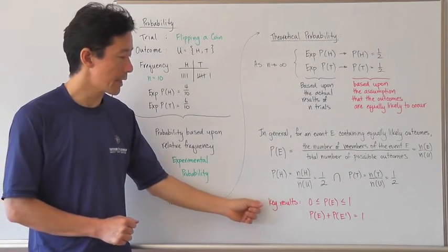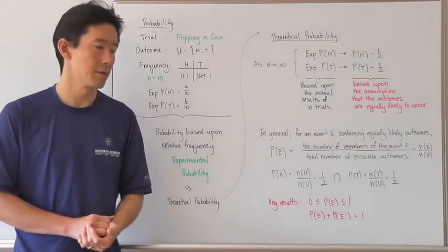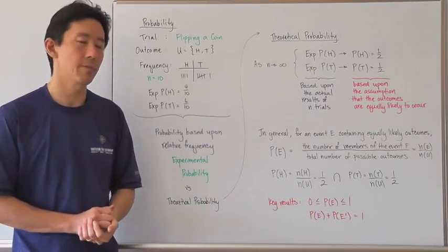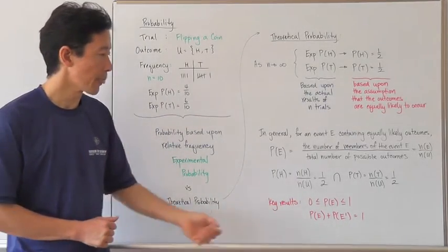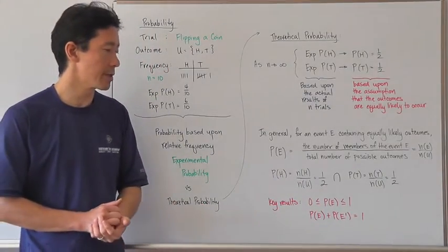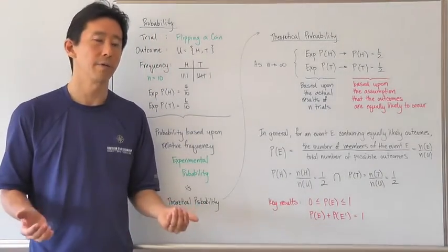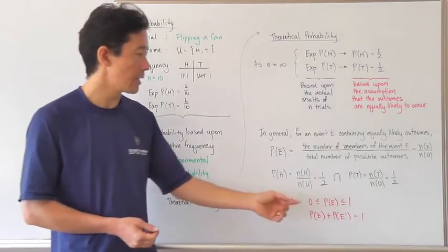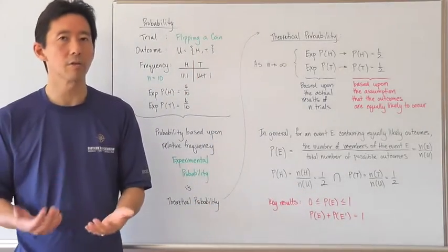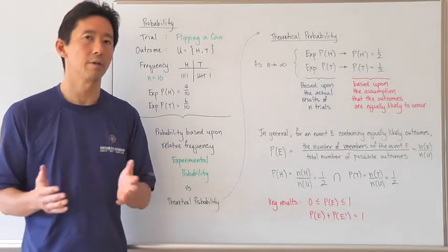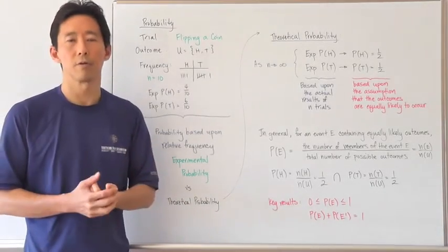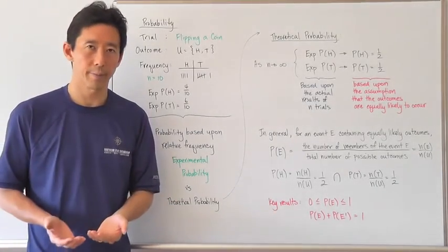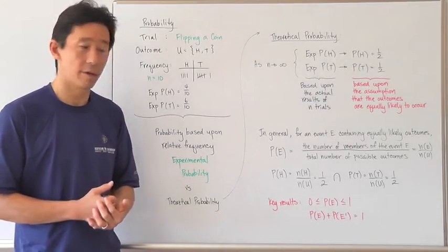We come out with some significant key results we need to be able to work with. The first says that any time you have the probability of an event, that probability has to be greater than or equal to zero and less than or equal to one. The probability of an event equal to zero means it's never going to happen, and equal to one means it's always going to happen. You can't have negative probabilities and you can't have probabilities greater than one.